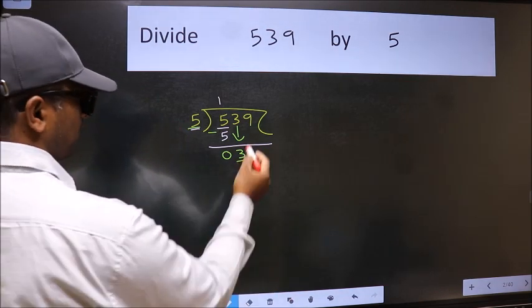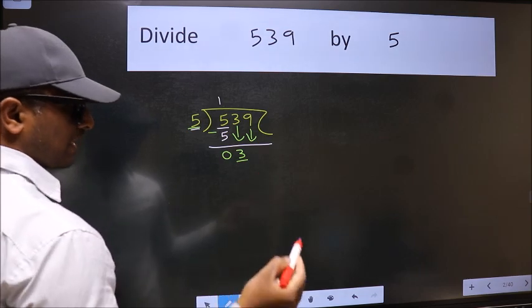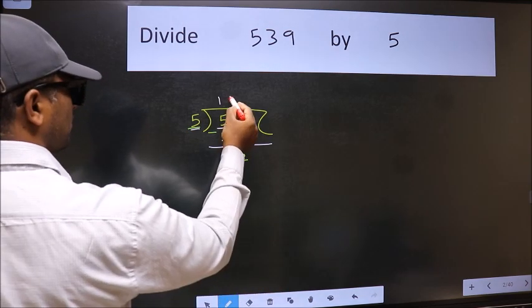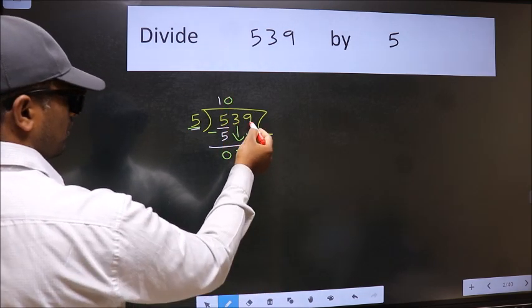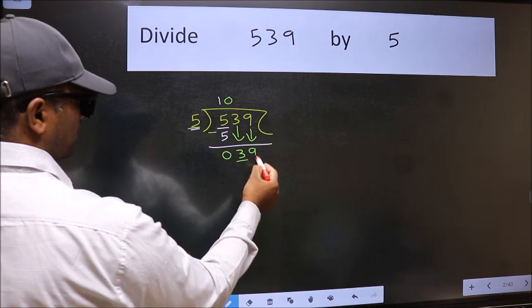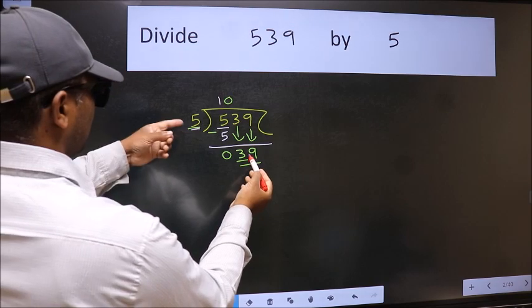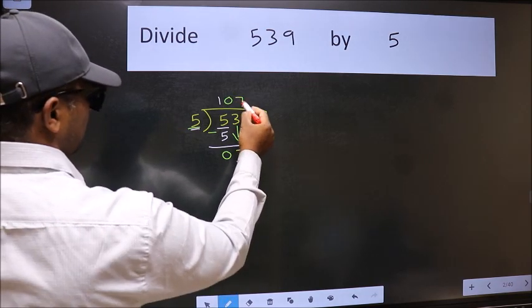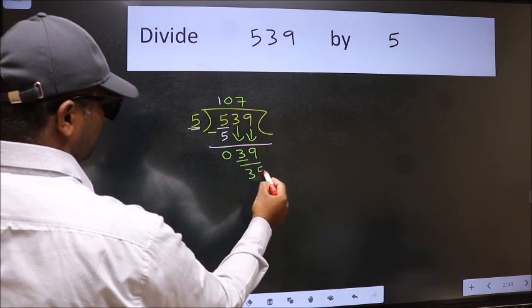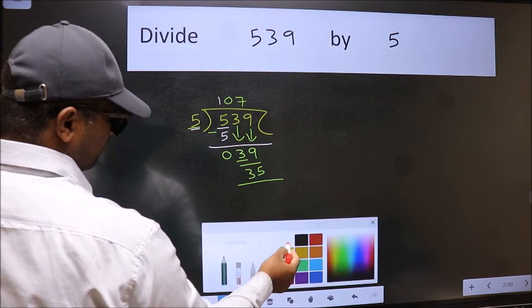The rule to bring down the second number is we should put 0 here. Then only we can bring this number down. Now 39. A number close to 39 in the 5 table is 5 times 7 equals 35.